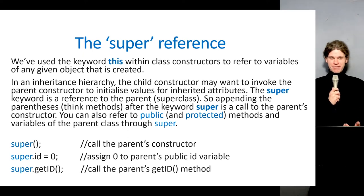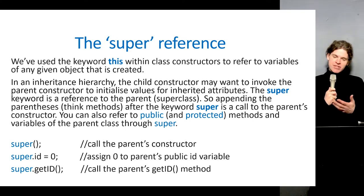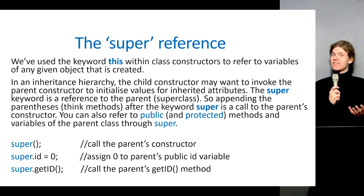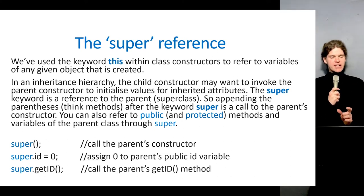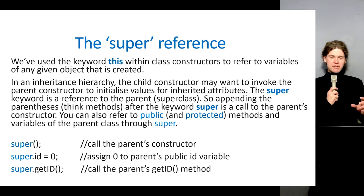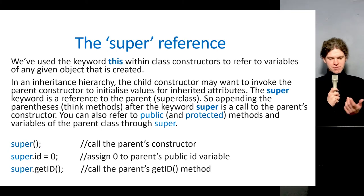There's an equivalent for the parent reference within the child: the super reference, which gives us access to the parent. We don't want to name the parent hard-coded. In Java there's only single inheritance, but we use the super reference. If you attach parentheses to super, that's a call to the parent constructor — you'll see in the code where something from the child constructor is passed to the parent's constructor. You can also refer to variables and methods of the parent through super, just like you would with this.